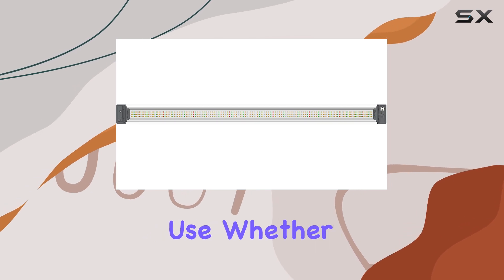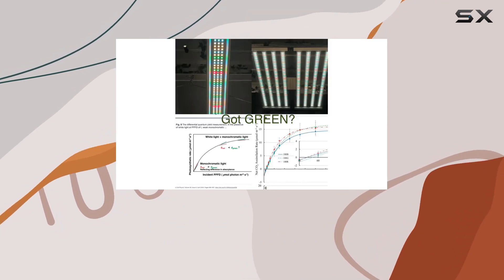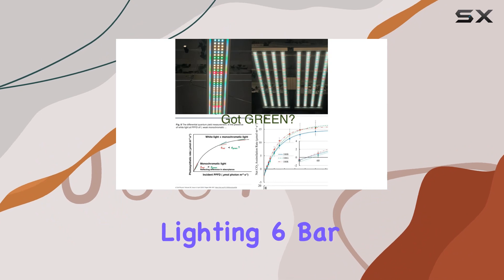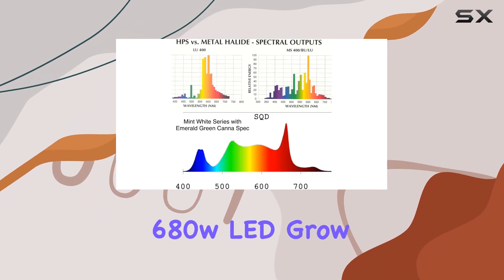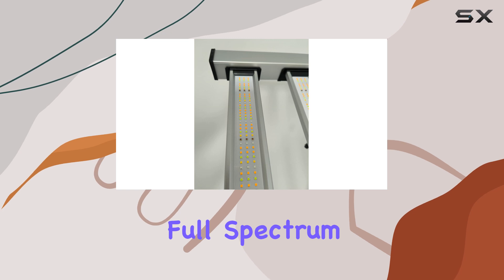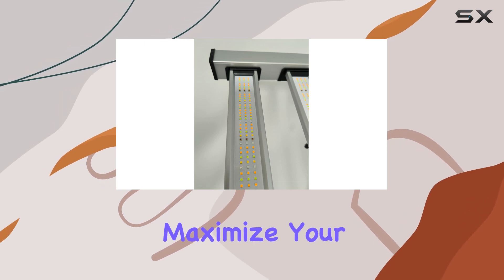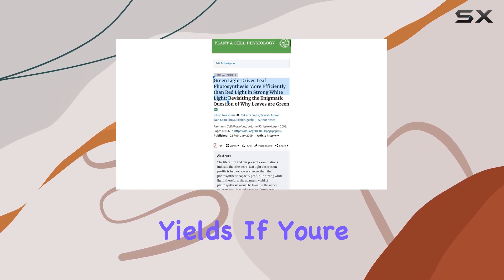Whether you're a seasoned indoor gardener or just starting out, the Mammoth Lighting Six Bar 680W LED grow light offers an energy-efficient, full-spectrum solution that promises to maximize your indoor plant yields.